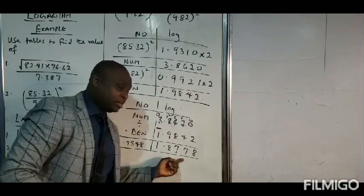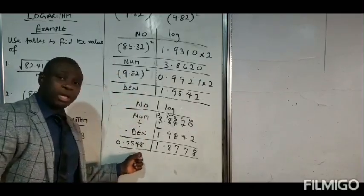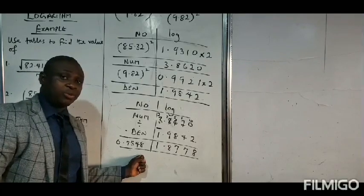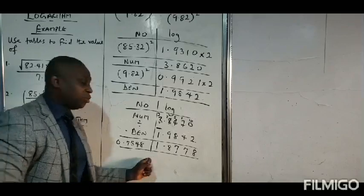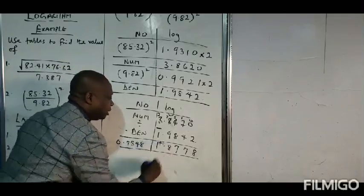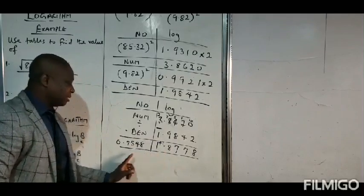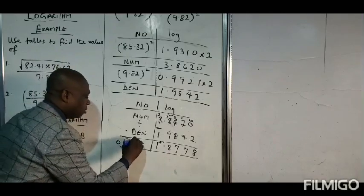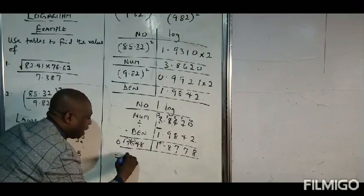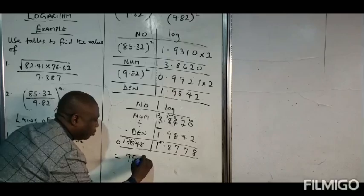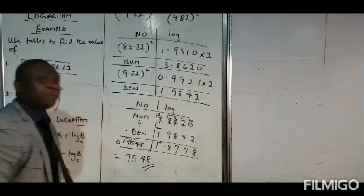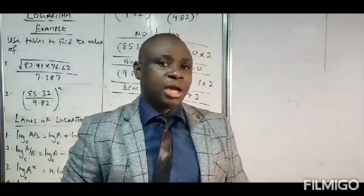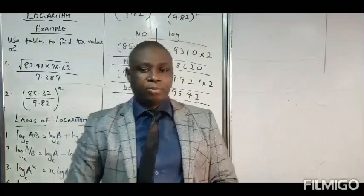The anti-log of the mantissa gives us 0.7548. Remember what I said in the last example — you must always add one to the characteristics to obtain the number. Adding one to the characteristics gives us two, which signifies that the decimal moves two places to the right. So we move one and two places, and therefore our final answer is 75.48. If you have any questions, you can send them to my private chat and I will do justice to them. God bless you.